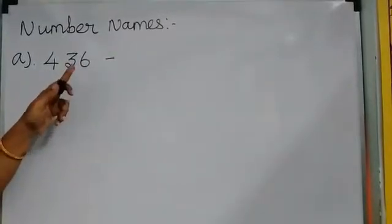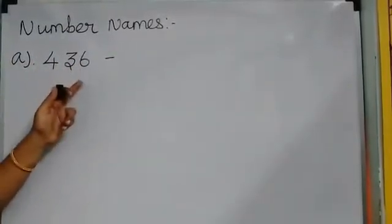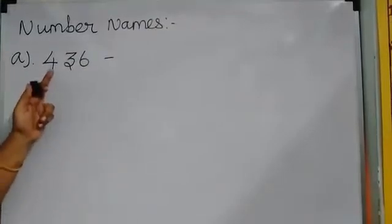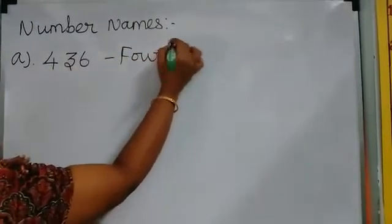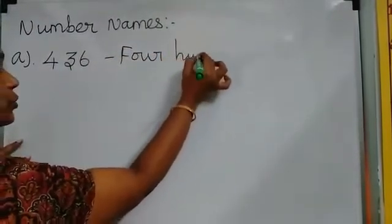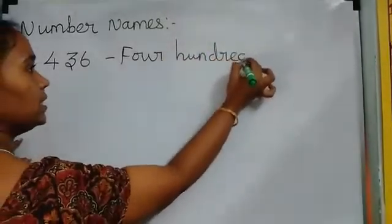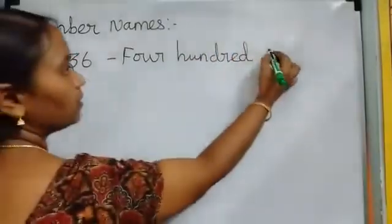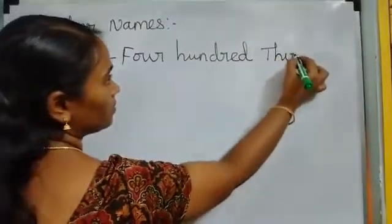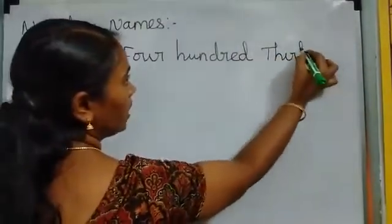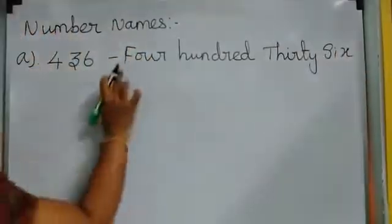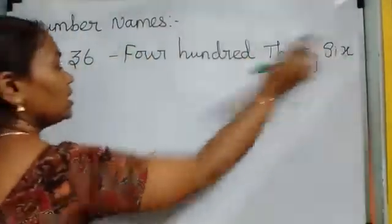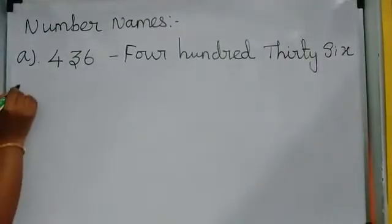See: 4, 3, 6. How to read that number? 436. How to write it? 4 — H-U-N-D-R-E-D, so 400. Plus 30 — T-H-I-R-T-Y. Plus 6 — S-I-X. So 436 is four hundred and thirty-six.